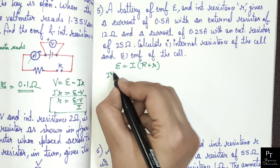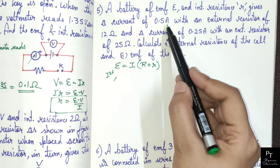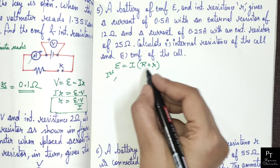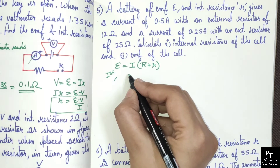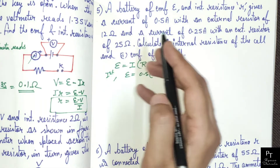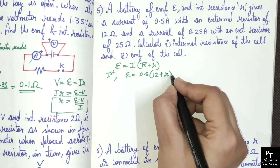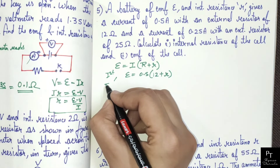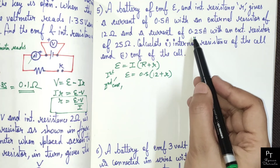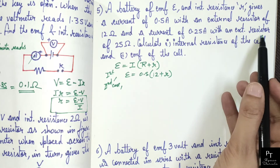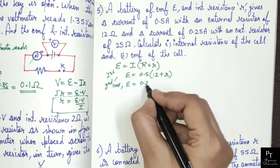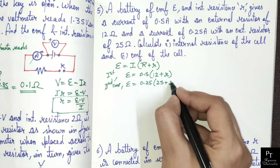In the first case we have current 0.5 A and external resistor 12 ohm. Substituting values: EMF equals 0.5 into (12 plus r). In the second case, current equals 0.25 ampere and external resistance is 25 ohm. So EMF equals 0.25 into (25 plus r).